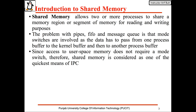Shared memory allows two or more processes to share a memory region or segment of memory for reading and writing purposes. The problem with pipes, FIFOs, and message queues is that both switches are involved as the data has to pass from one process buffer to the kernel buffer and then to another process buffer. Since access to user space memory does not require a mode switch, shared memory is considered as one of the quickest means of IPC.